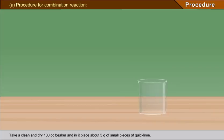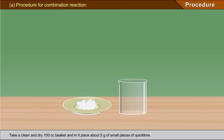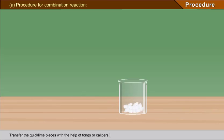Procedure for combination reaction: Take a clean and dry 100 cc beaker. Place about 5 grams of small pieces of quicklime. Caution: Do not lift quicklime pieces with bare or wet hands. It can cause severe skin burns. Transfer the quicklime pieces with the help of tongs or calipers.